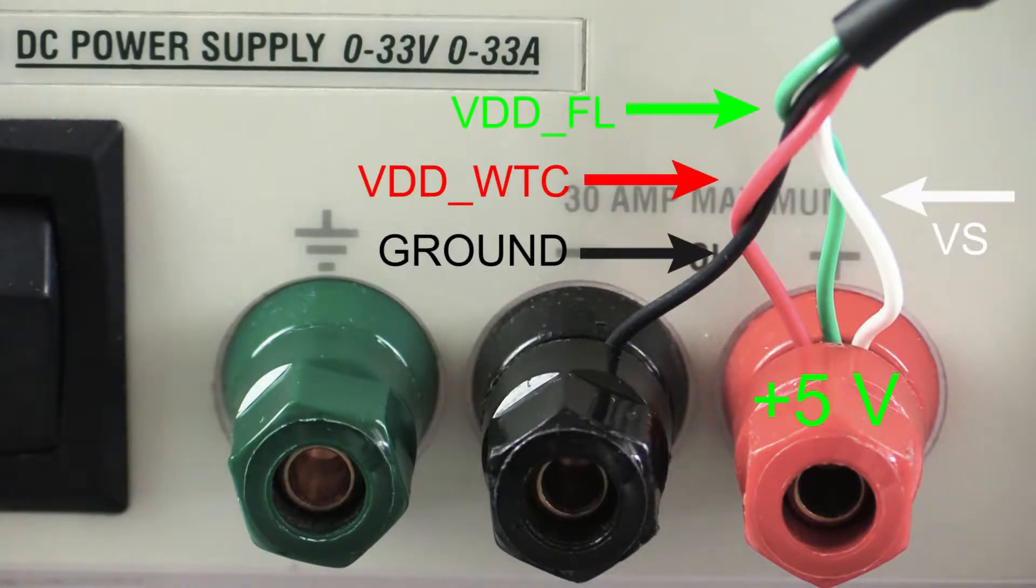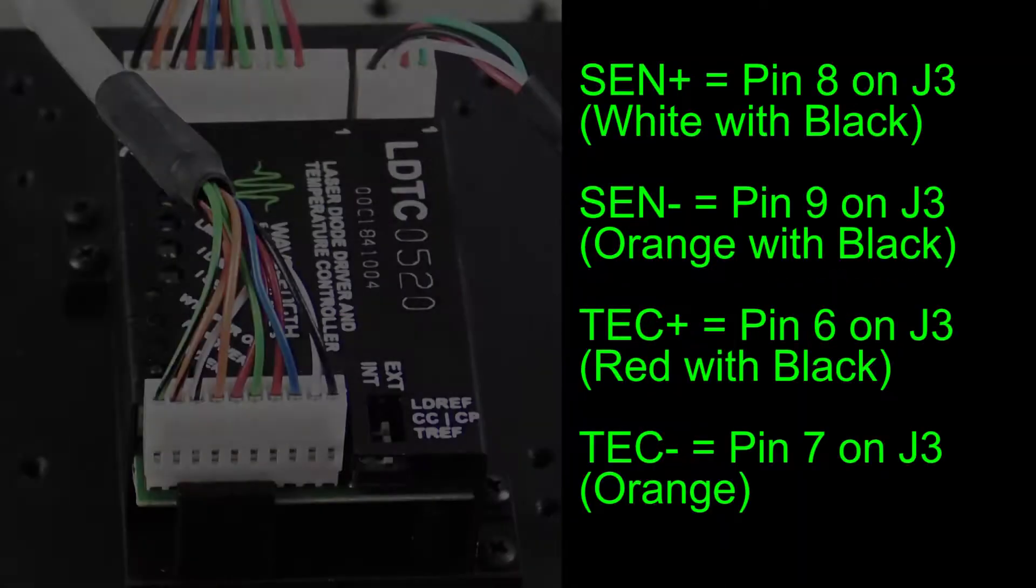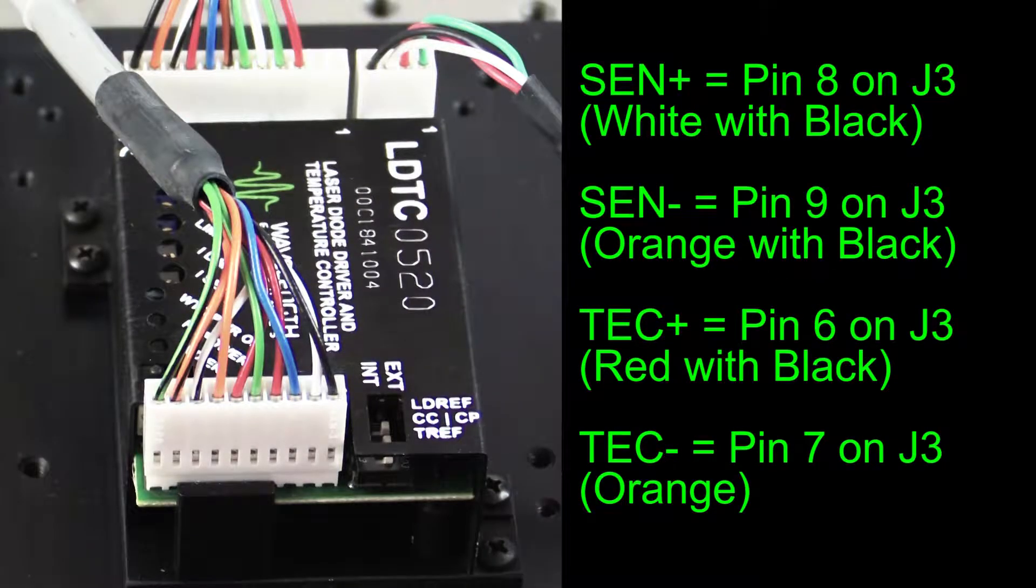Connect all three power supply leads to plus 5 volts. Using WCB301, connect the thermistor to sensor plus and sensor minus, and the thermoelectric to TEC plus and TEC minus.